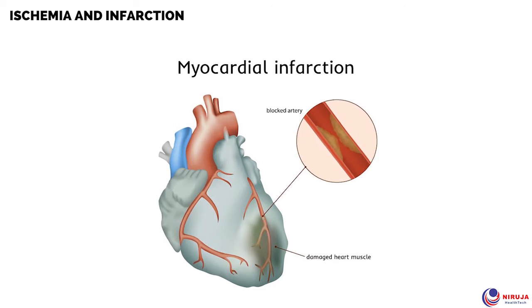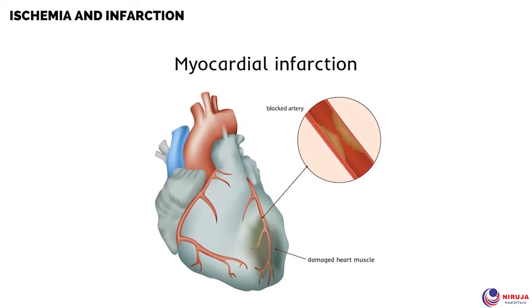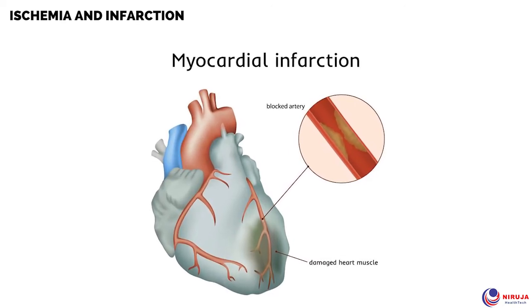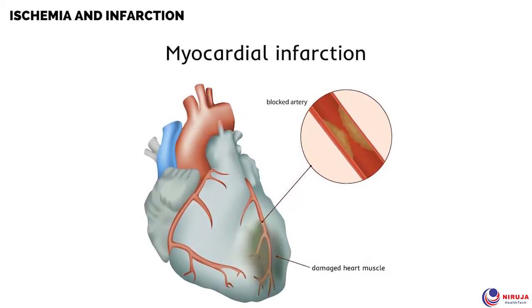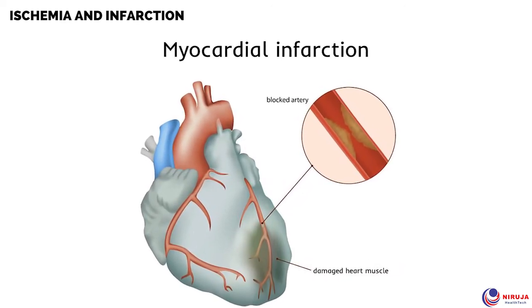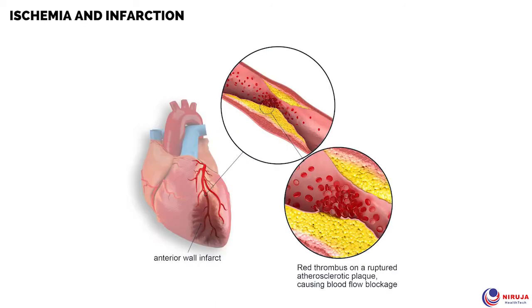Myocardial ischemia means insufficient blood flow to the heart muscles. Myocardial infarction means a stoppage of blood flow in the heart due to blockage or rupture of blood vessels, which further leads to a heart attack. Similarity: both have the same cause — a decrease in blood supply which further reduces oxygen supply.